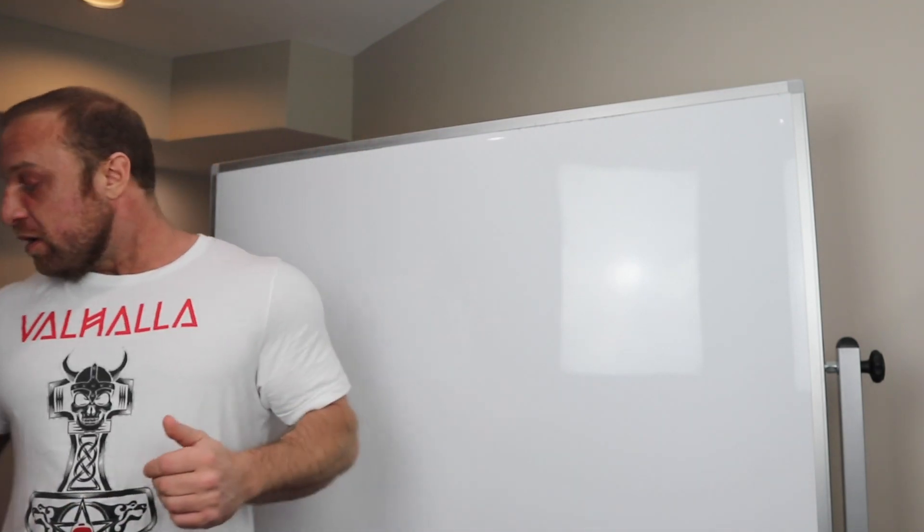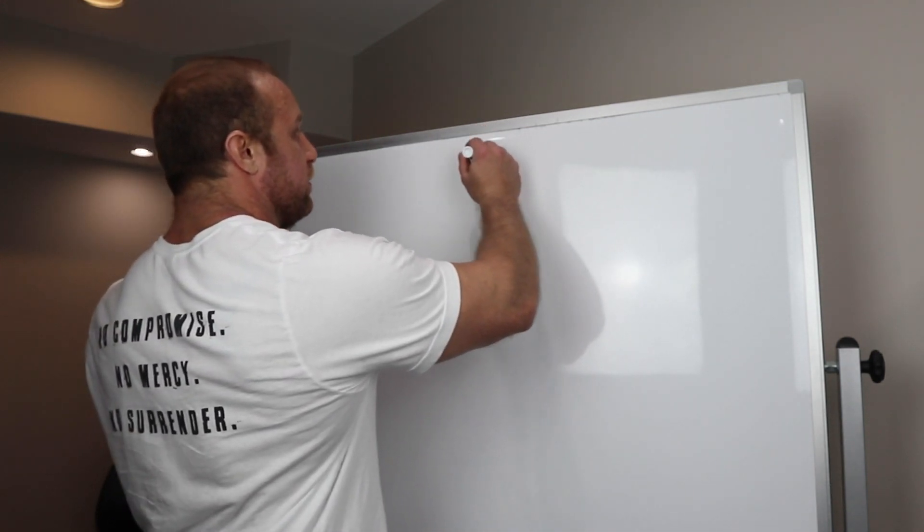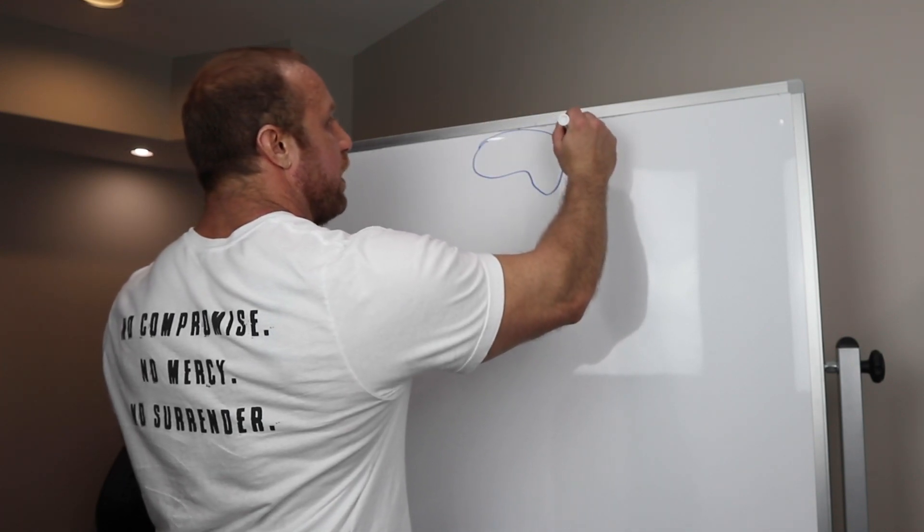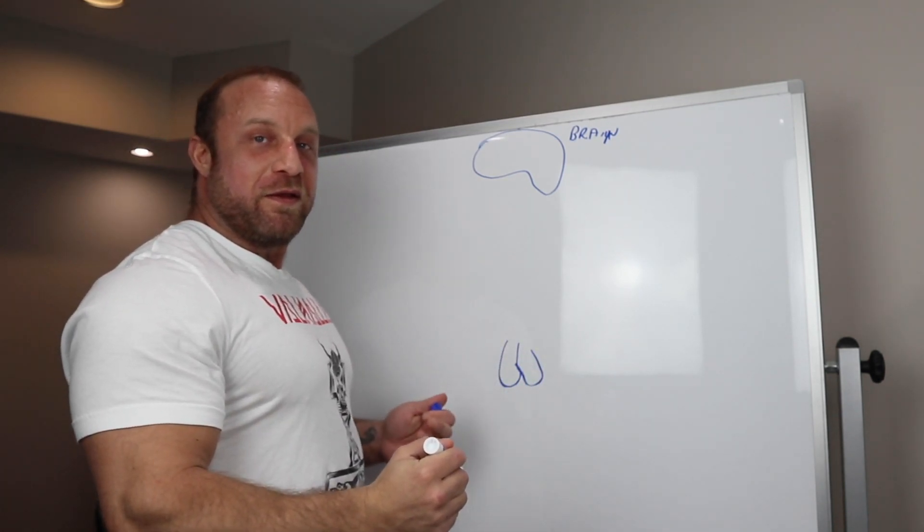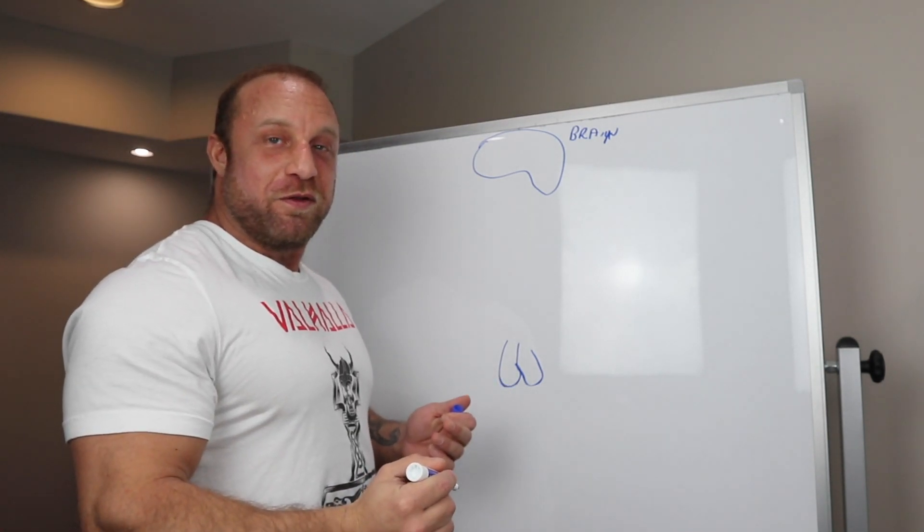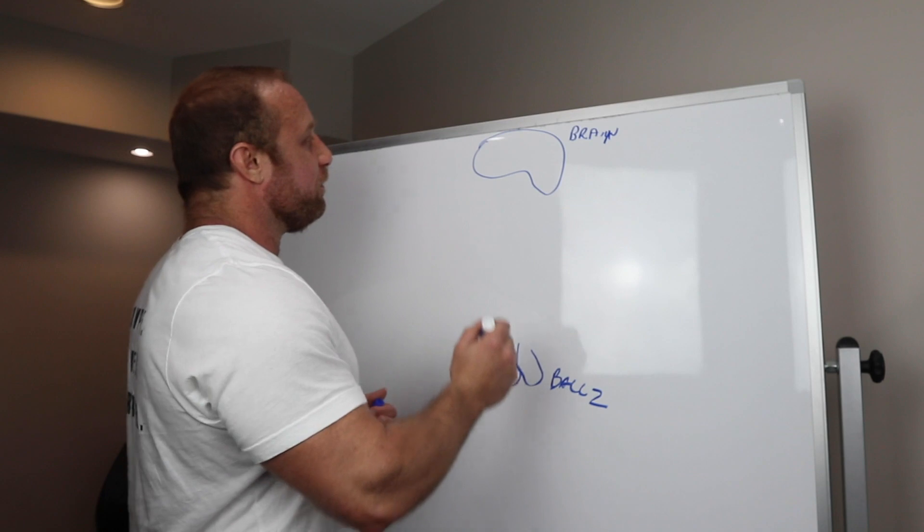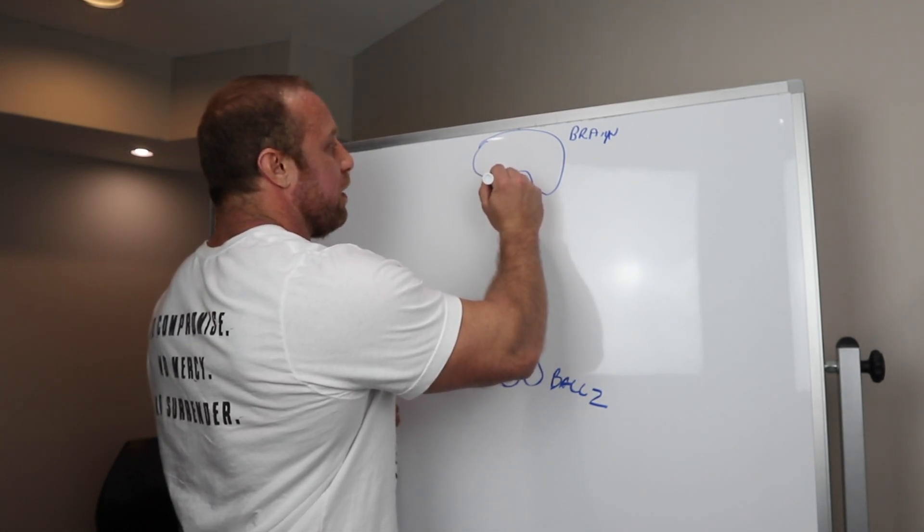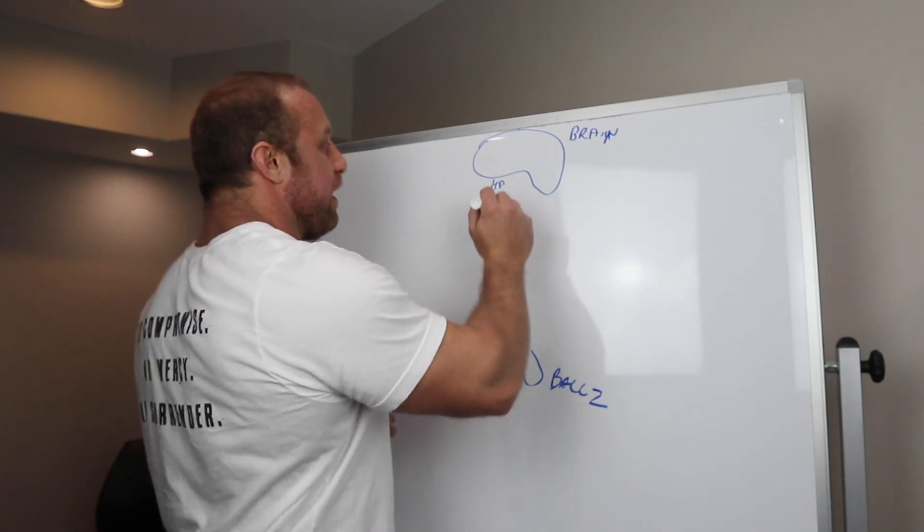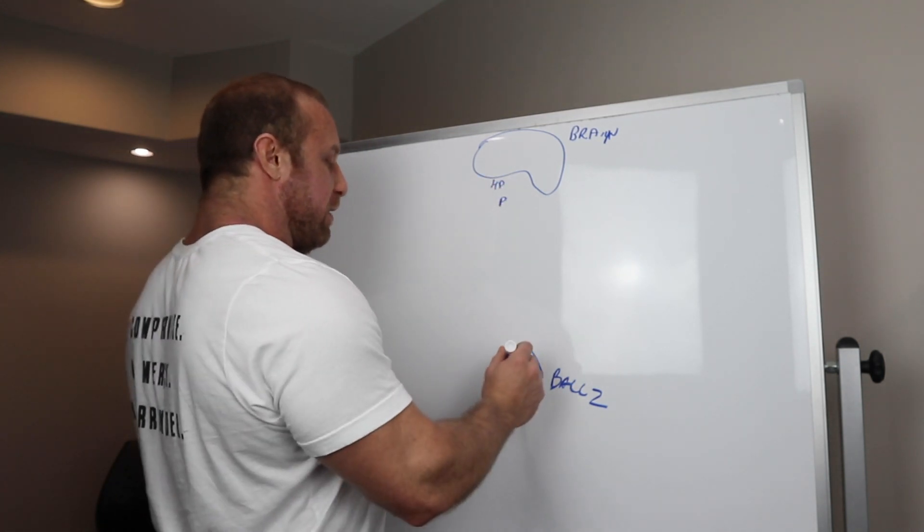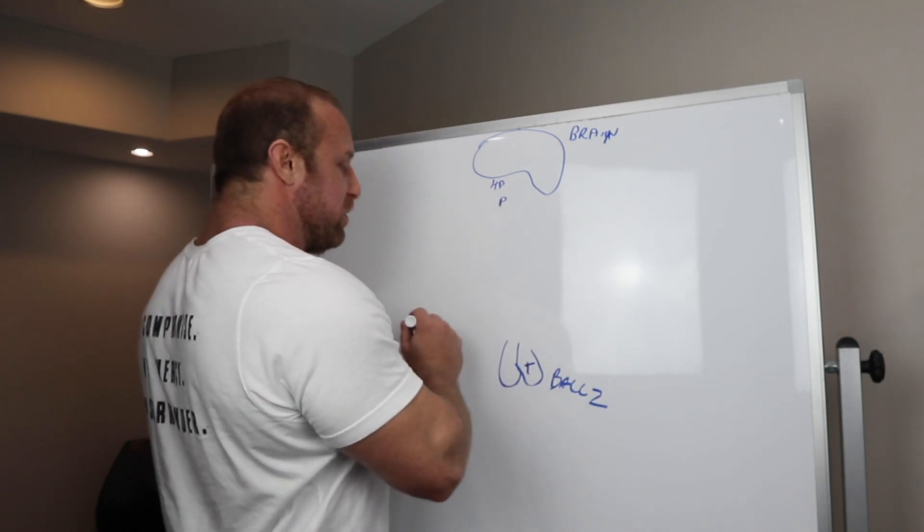When somebody injects testosterone, what they're going to do is they're going to shut off their natural production. So you've got a brain. This is brain. And then you've got balls. Now you might just have one and not the other, but we're going to assume for the purpose of argument that you have both brains and balls. Alright, balls. Let's put a Z to make it stylish. So over here you have the hypothalamus, we're going to call it HP, it's not Hewlett Packard. And then we're going to have a pituitary. So there's hypothalamus, pituitary, balls. We're going to put a T in here for testes, in case you don't know what balls are.